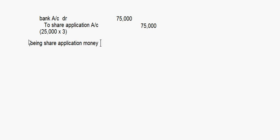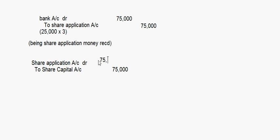For Ajit and Company Ltd: 25,000 shares, application money ₹3. First entry — Bank Account debit to Share Application Account: 25,000 × 3 = ₹75,000. This is on receipt of share application money. After that, this money is transferred to share capital — Share Application Account debit to Share Capital Account: ₹75,000, being share application money transferred to share capital on allotment of shares.